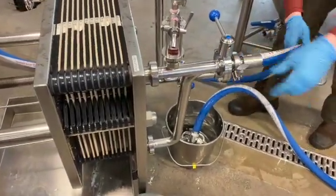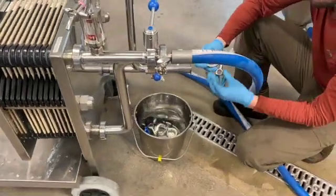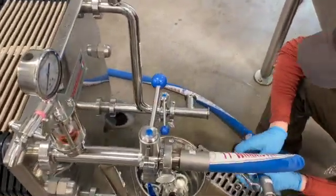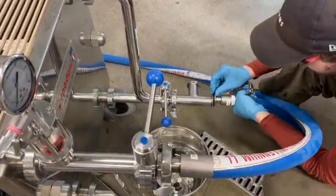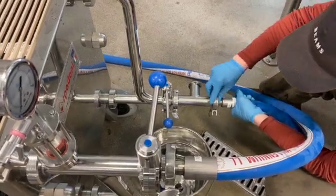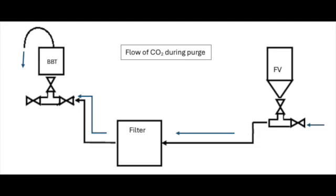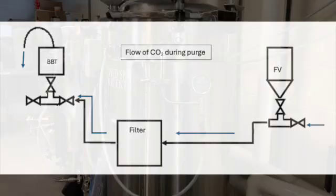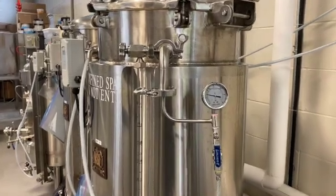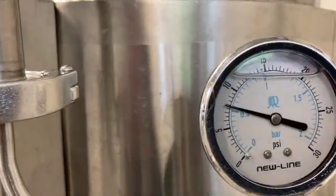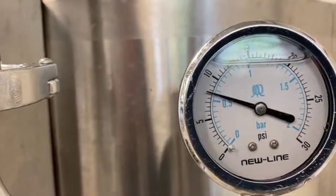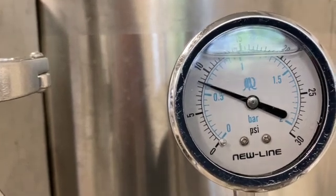Once the filter sanitation is complete, the hose carrying the unfiltered beer from the aging tank into the filter and the filtered beer from the filter to the bright beer tank are connected to the product in and product out sides of the filter. To reduce oxygen pickup during the filtration operation, transfer hoses, the beer filter, and the bright beer tank are all purged with carbon dioxide gas for several minutes. Prior to filtration, the CO2 pressure in the bright beer tank is set to about 10 psi and the fermentation vessel pressure is adjusted to a few psi higher than that in order to move the beer from one vessel to another.